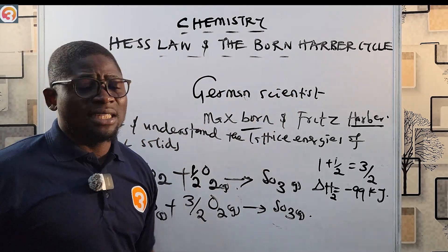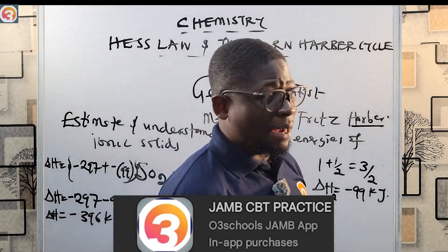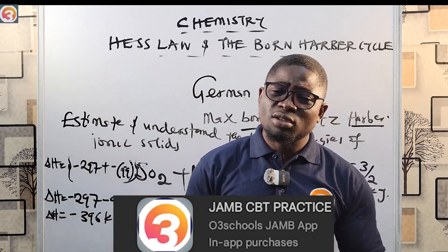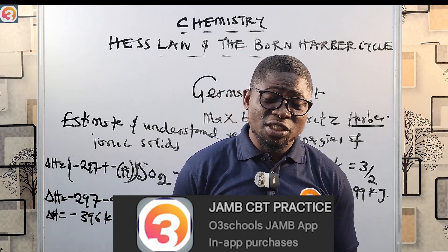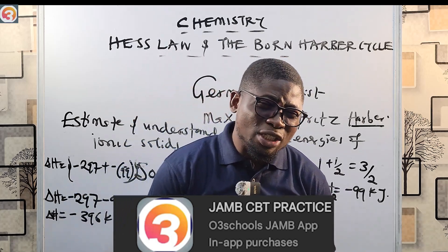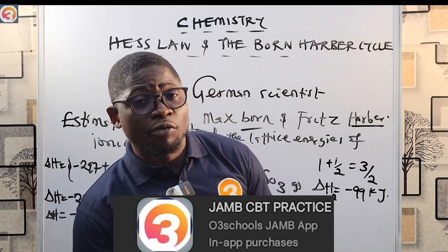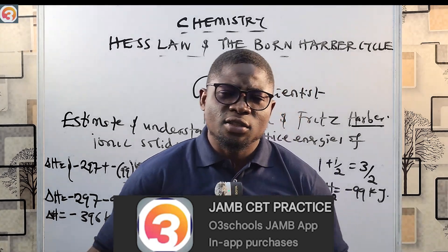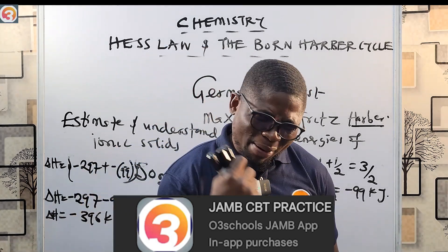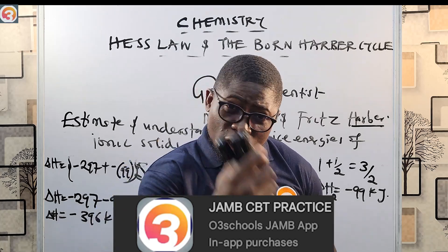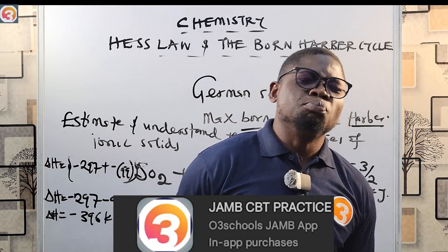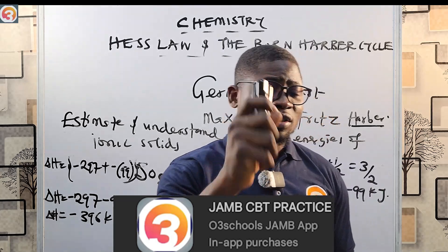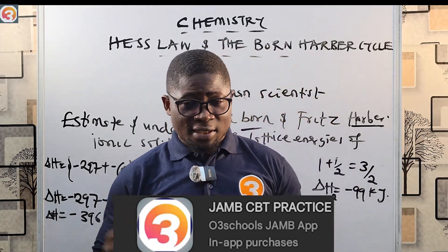That is all about Hess's Law and the Born-Haber circle. Please go and get a good JAMB CBT app — like the Hotel School JAMB app — from the Play Store. Download and install it on your phone and start practicing lots of questions. If you want to succeed in JAMB, practice questions, answer questions, fight with questions, build confidence, and you'll walk into the hall and come out successfully. Like this video, subscribe, keep sharing, and I'll see you in the next episode. Thank you for watching.